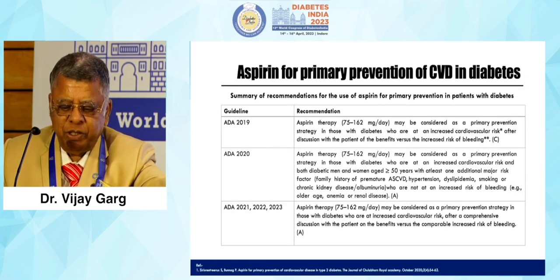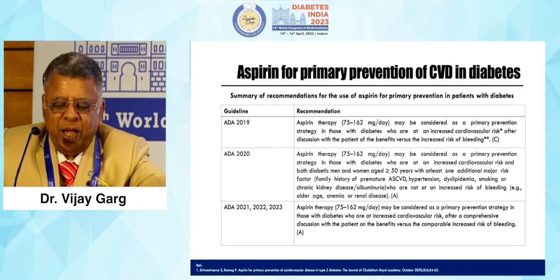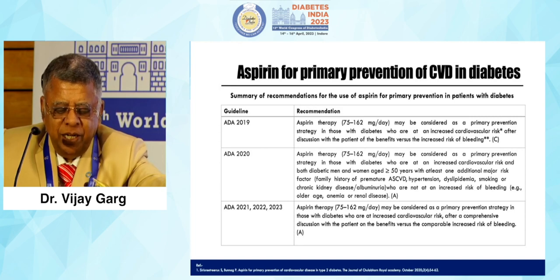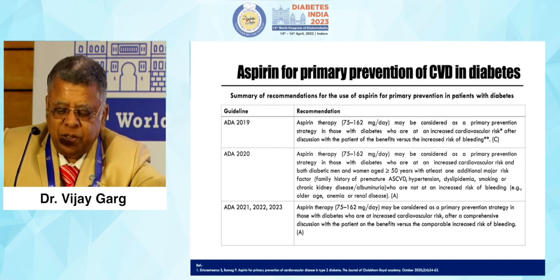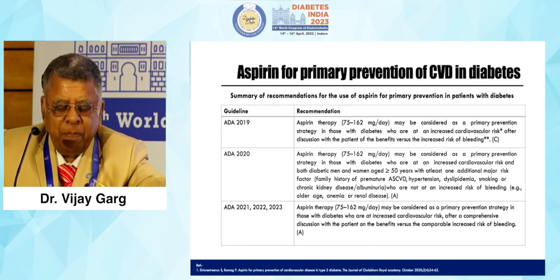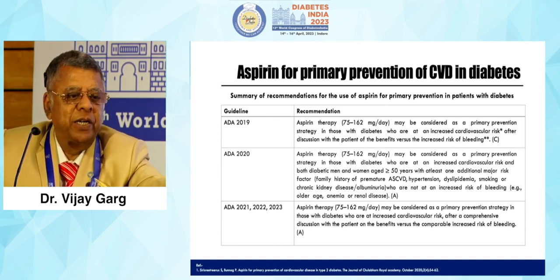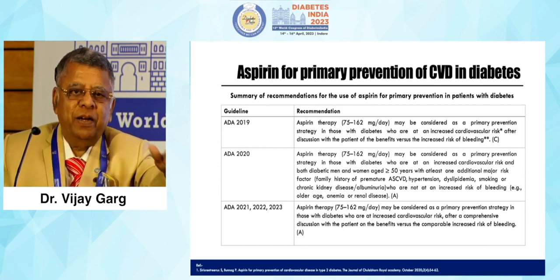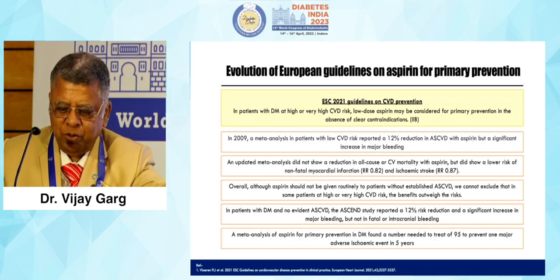Aspirin for primary prevention in cardiovascular diabetes — ADA 2021, 2022, 2023 guidelines say: aspirin therapy may be considered as primary prevention in those with diabetes who are at increased cardiovascular risk, after a comprehensive discussion with patients on the benefit versus the comparable increased risk of bleeding. This balance is very important.